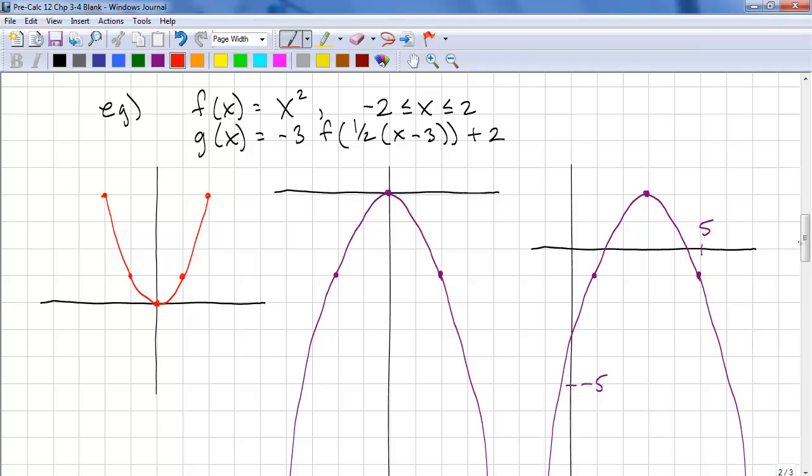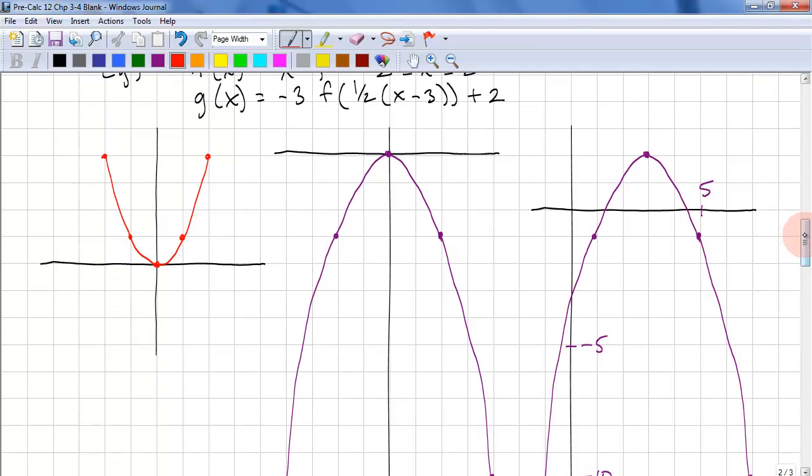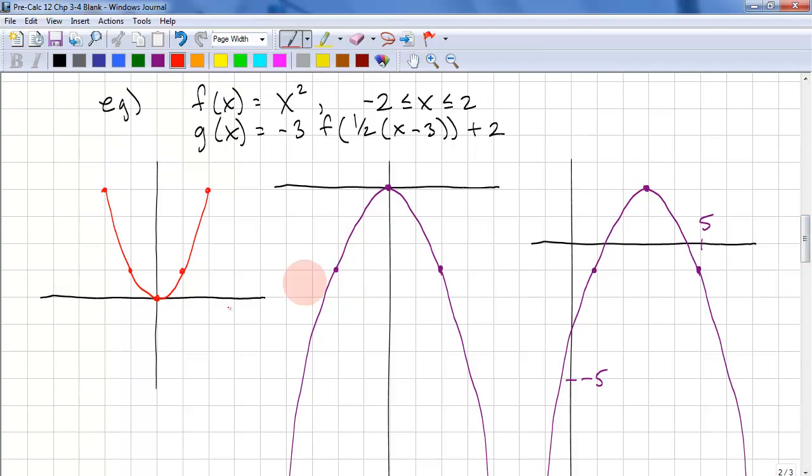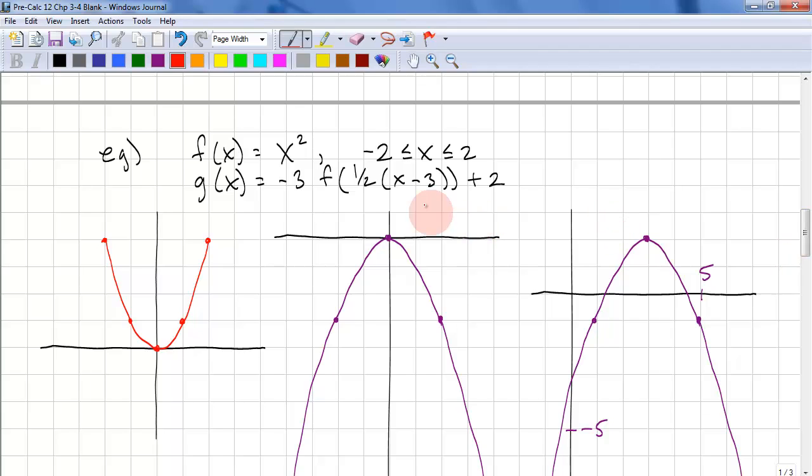Let's do this with an example. We have f(x) = x² between -2 and 2. We have g(x) = -3 times f(½(x - 3)) + 2. You can do the scaling and reflection in the same time. So we have 1 times -3 is -3. 1 times -3 is -3. 4 times -3 is -12. So we have that here and here. And finally, we do the translation. So this is right 3 and up 2.